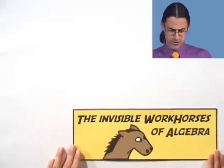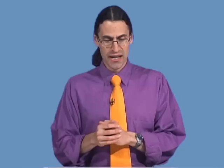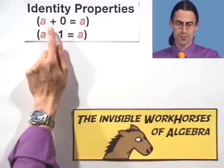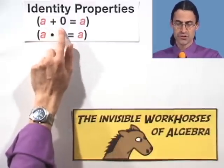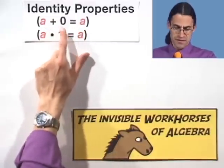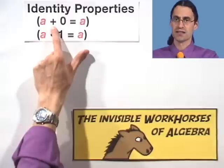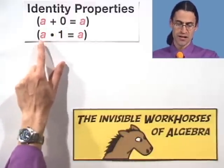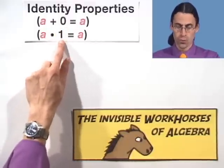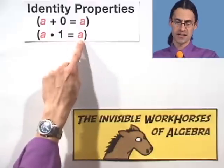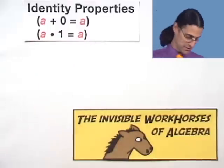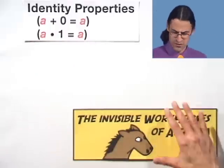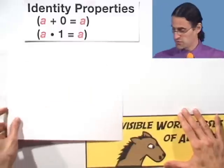You know them, you love them, you use them all the time, but it's worth recording. We have these two identity properties. If you take any number and add it to zero, you get the any number back. We say that zero is the additive identity element. Similarly, with respect to multiplication, if you take any number and multiply it by one, you get the any number back. Here we say one is the multiplicative identity element.